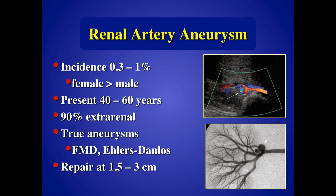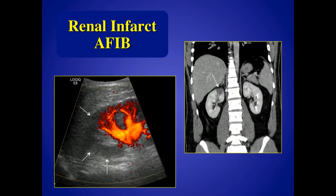True aneurysms are related to connective tissue disease like Ehlers-Danlos, and you typically wait for two to three centimeters before considering intervention. We also pick up infarcts — patients presenting with back pain or hematuria, as in a patient with a history of atrial fibrillation who developed hematuria and pain. You can see very nicely the wedge-shaped defect in the upper pole on the Power Doppler study. The patient went on to have a CT scan just to confirm the wedge-shaped abnormality.